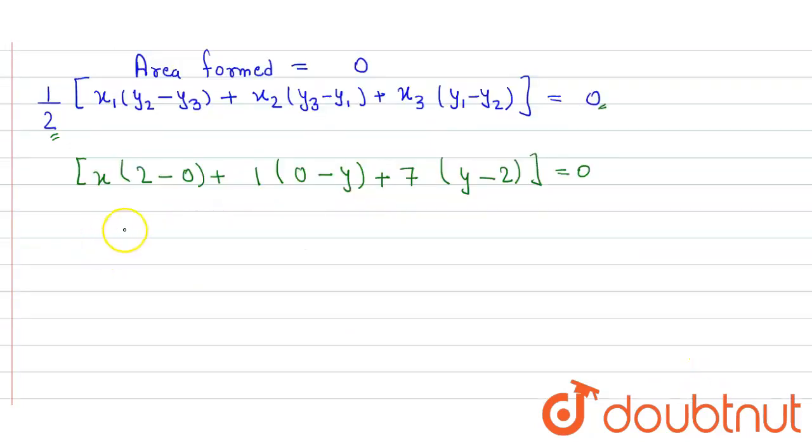So here it is 2x minus y plus 7y minus 14 is equal to zero.